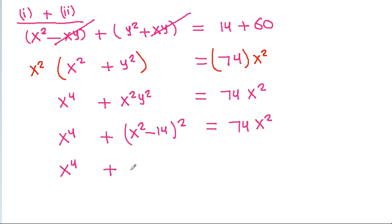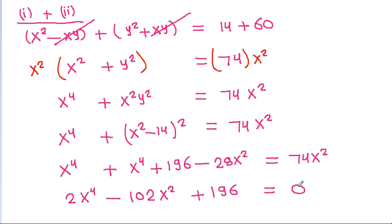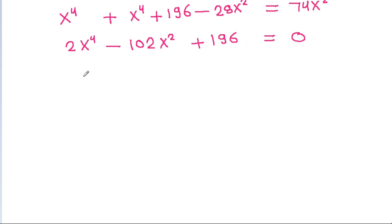Expanding x squared minus 14 whole squared gives x to the power 4 plus 196 minus 28 x squared, equal to 74 x squared. Combining like terms: 2 times x to the power 4 minus 102 x squared plus 196 equals 0. Dividing by 2: x to the power 4 minus 51 x squared plus 98 equals 0.